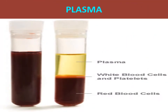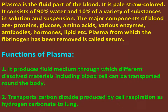In the figure you can see a test tube where the yellow part is the plasma. Plasma is the fluid part of the blood. It is pale straw colored and consists of 90 percent water and 10 percent of a variety of substances in solution and suspension. The major components of plasma are proteins, glucose, amino acids, various enzymes, antibodies, hormones, lipids, etc. Plasma from which fibrinogen has been removed is called serum.